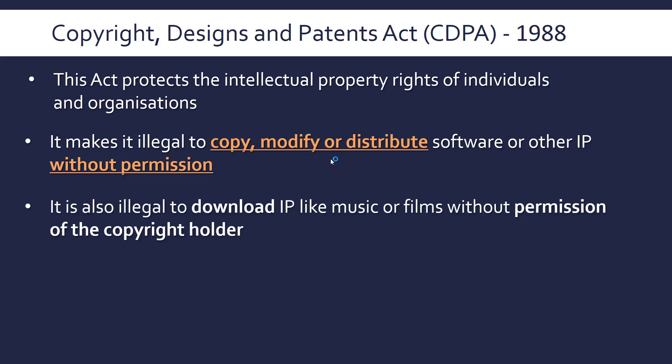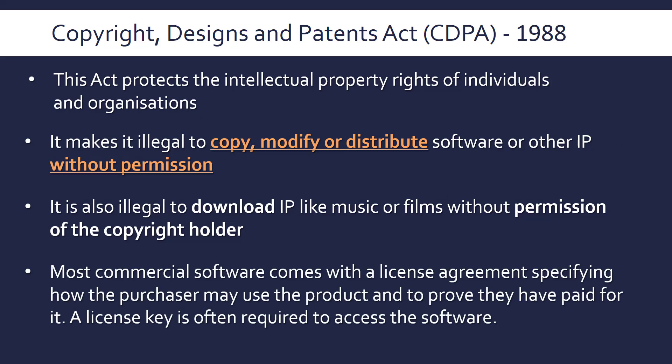Another consequence is that it's also illegal to download IP without permission — that's very relevant to computing; things like music and films are downloaded illegally very often because you don't have permission of the copyright holder. Most commercial software comes with a licence agreement which specifies how you as a user can use the software, whether you can copy, modify or distribute it. The licence proves you're actually allowed to use it — you've paid for it or got permission — and a licence fee is often required to access the software.